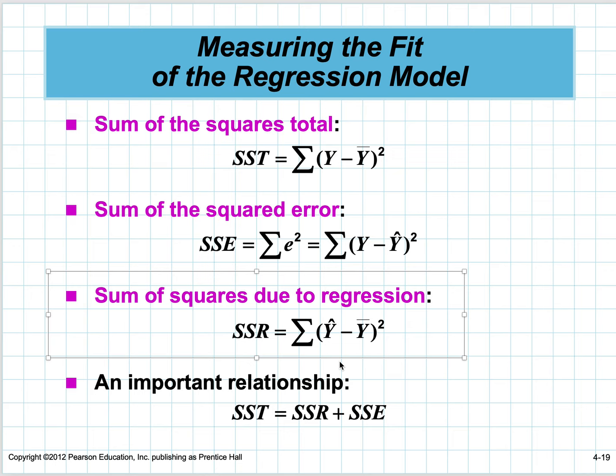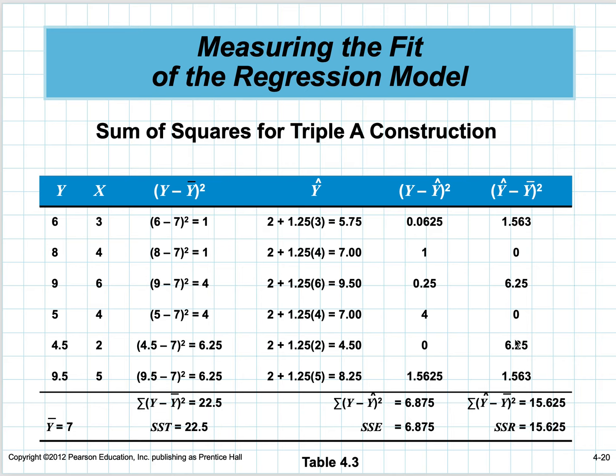If we add these up, we see they equal each other. You can go through and calculate all these sums of squares. The sum of squared values—6.9 plus 15.6 equals about 22.5—really does work.